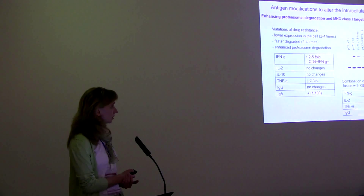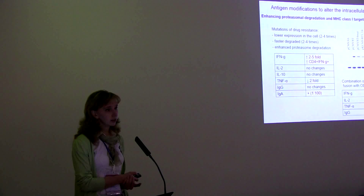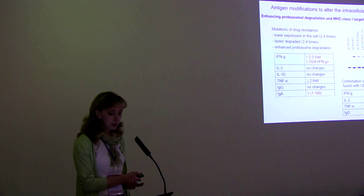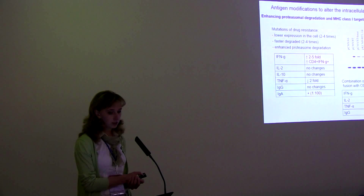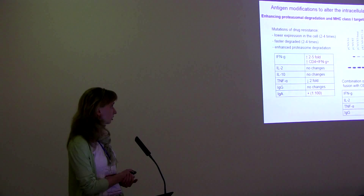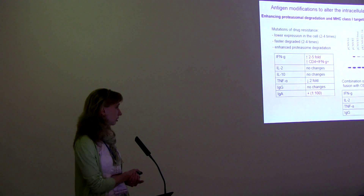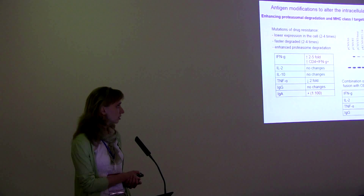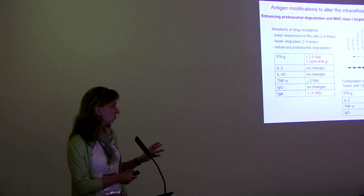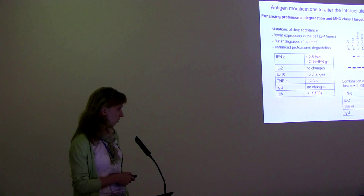When we tested these DNA immunogens in mice, we could show only some increase in interferon gamma production. The population of CD8 and CD4 cells producing interferon gamma was increased. We haven't detected any changes in IL-2 and IL-10, and detected only some decrease in TNF-alpha production. When we tried to combine these two proteasome-targeting approaches — ODC fusion with RT mutations — we couldn't detect any positive changes in immunogenicity.